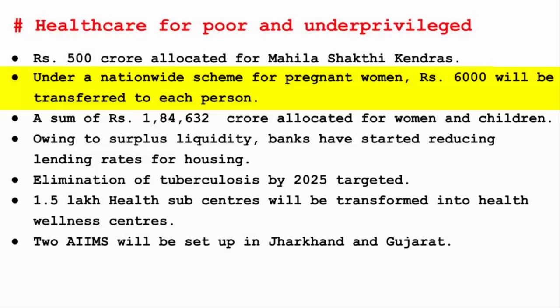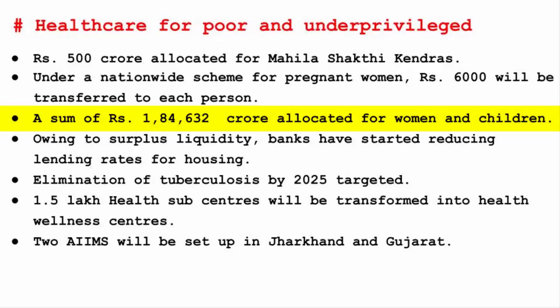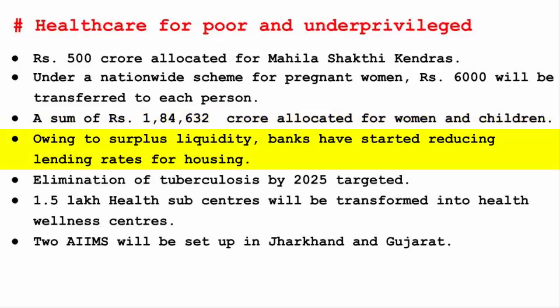Currently the pregnant women's scheme is being implemented on a pilot basis in 53 districts with a benefit amount of Rs. 4,000. A sum of Rs. 1,84,632 crore has been allocated for women and children, increased from Rs. 1,56,528 crore, through Mahila Shakti Kendras at village level, Beti Bachao Beti Padhao Yojana, and transferring Rs. 6,000 to pregnant women's accounts. Due to surplus liquidity from demonetization, banks have started reducing lending rates for housing, which will make housing loans affordable, increasing demand for housing, and in turn increasing accessibility, connectivity, and job creation.